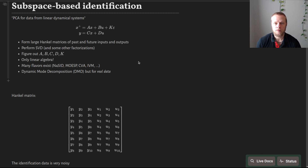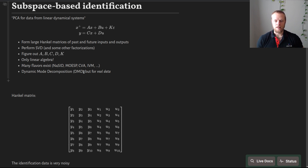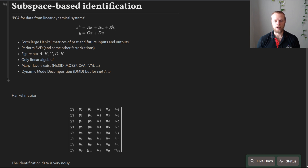We can also compare subspace-based identification to dynamic mode decomposition, abbreviated DMD. Subspace-based ID is like DMD but for real data. DMD is a model order reduction technique, whereas subspace-based identification also performs model order reduction but takes into account the fact that data is not perfect — there is noise and disturbances. Otherwise, they use very similar algorithms under the hood.